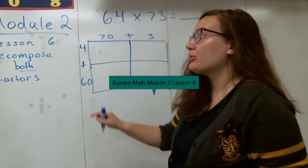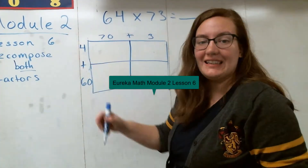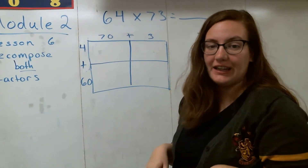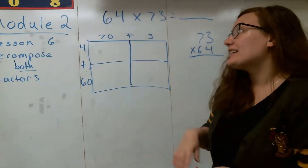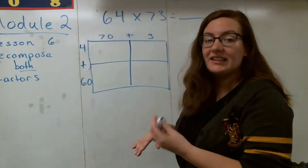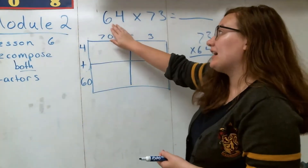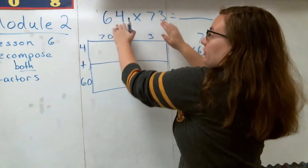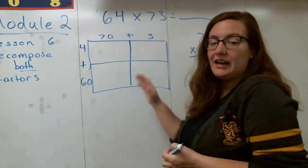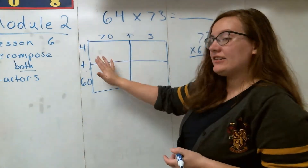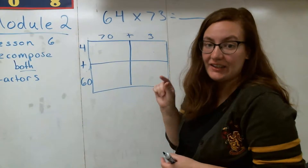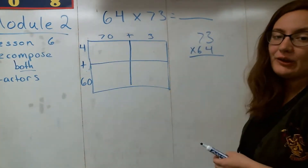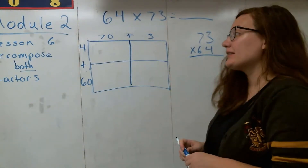Hi, 5th grade. Today we're going to be doing Module 2, Lesson 6. This lesson is going to be very similar to the previous lessons we did for Lesson 5, except now instead of just decomposing or getting the expanded form of one of my units, I am now going to be doing it for both of my factors. My area model is actually going to be increasing in size, and I'm going to show you why this is going to help us for our standard algorithm.